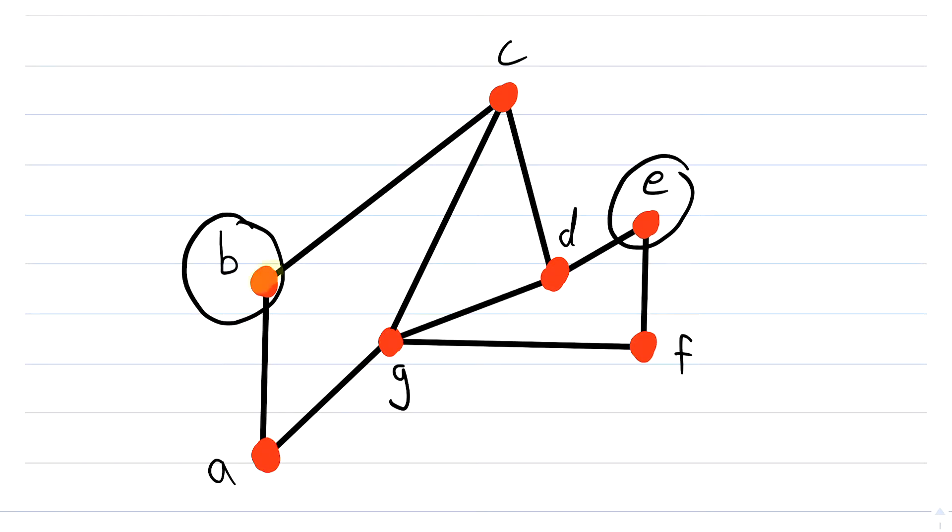So for example, we could go from b to c, from c to d, and then from d to e. That is a path that connects b to the vertex e. And there exists at least one such path connecting every pair of vertices in this graph. And that is why it's a connected graph.